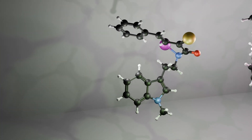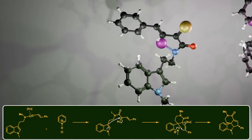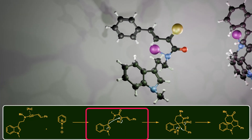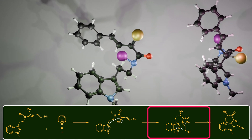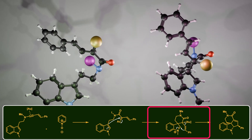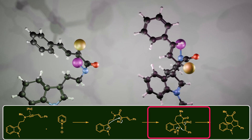Now let's return to our case. In the first pathway, the indole acts as a nucleophile, attacking the empty orbital of the carbene center from its free position. This creates a positively charged nitrogen, which then triggers an intramolecular attack of a double bond, forming the fourth ring and completing the synthesis.